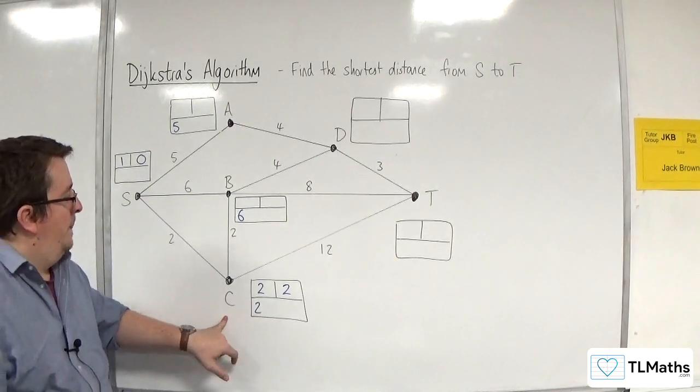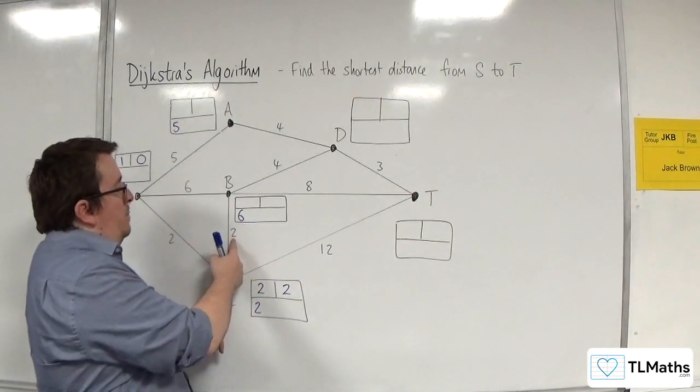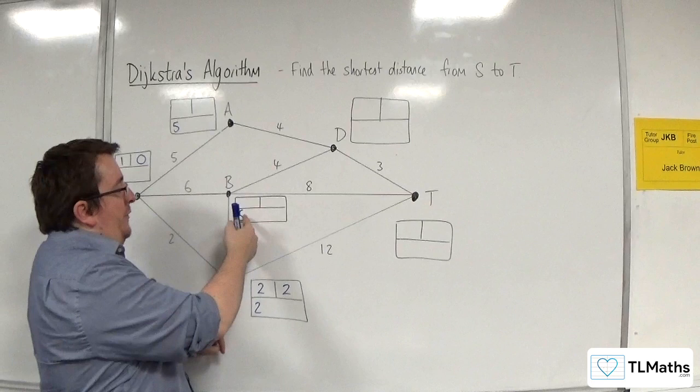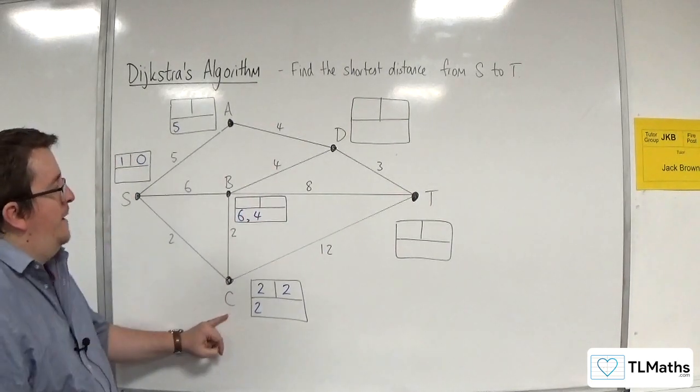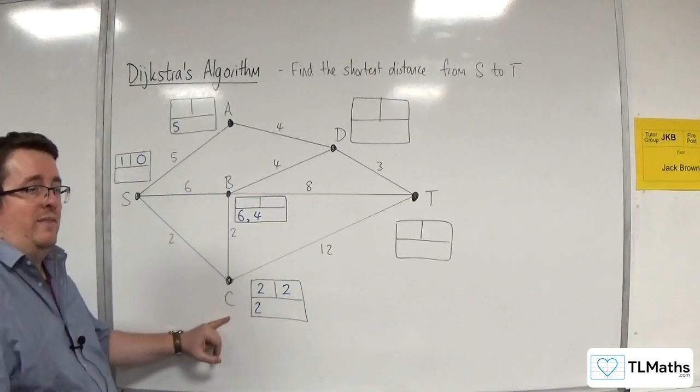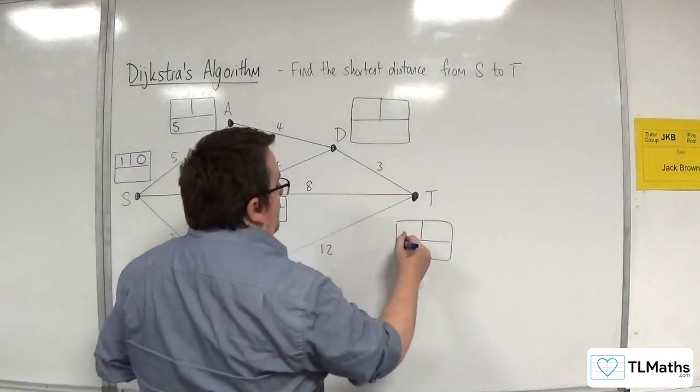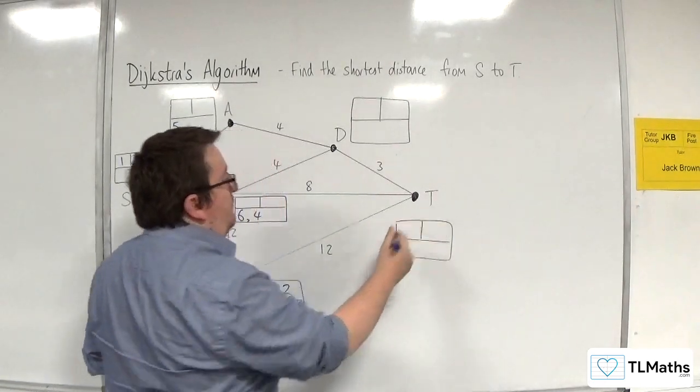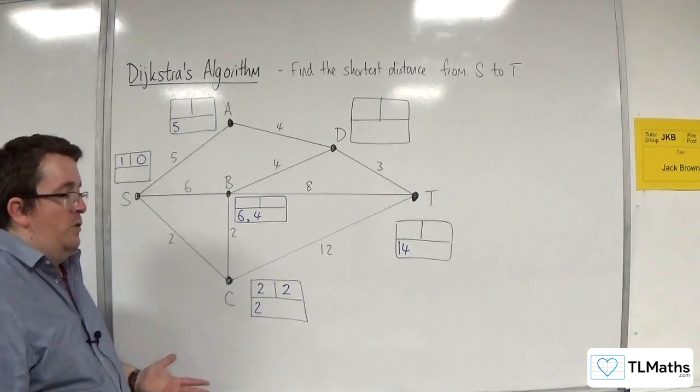Now, from C, I could go to B. So two plus two would be four, which is better than six. So I'm going to put comma four. So four is another working value and a better working value for B. Two plus 12 would be 14, so the working value of 14 goes in for T. I've now exhausted all the possible routes out of C.